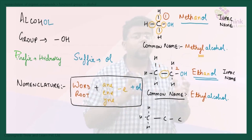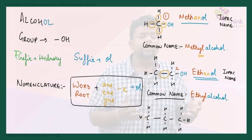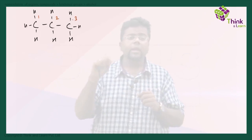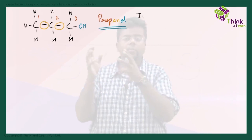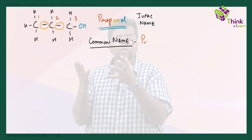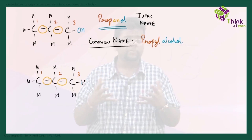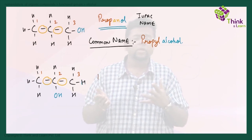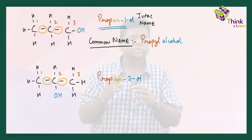For a three-carbon chain, the name should be propane. If I replace the H with OH, the name becomes propanol, and the common name is propyl alcohol. Now if I do one modification — I re-place the OH at the second carbon — this becomes propan-2-ol, because the OH is placed at the second carbon.